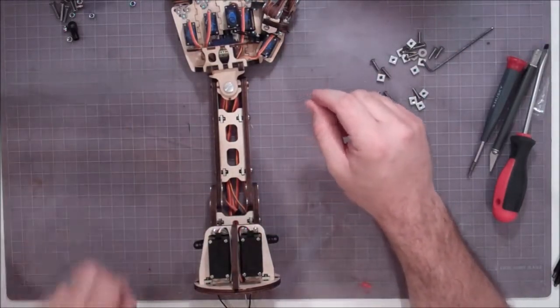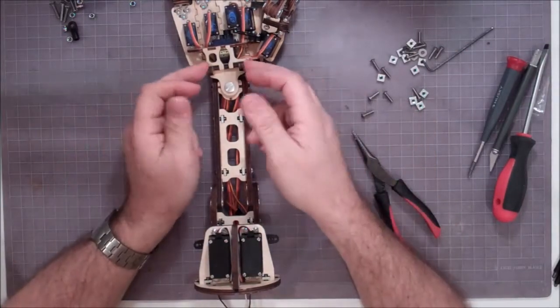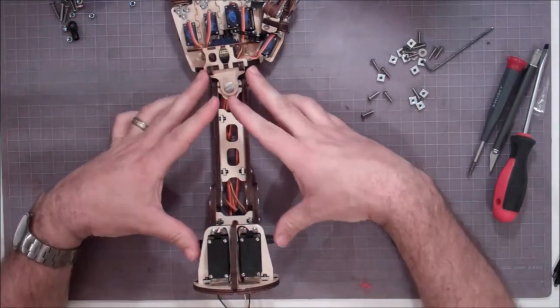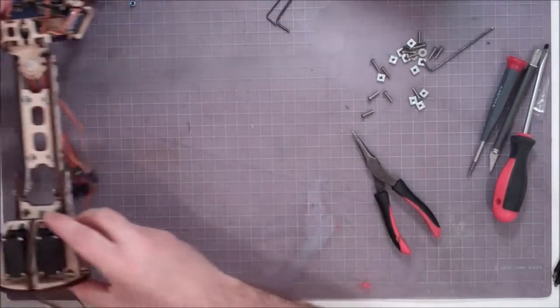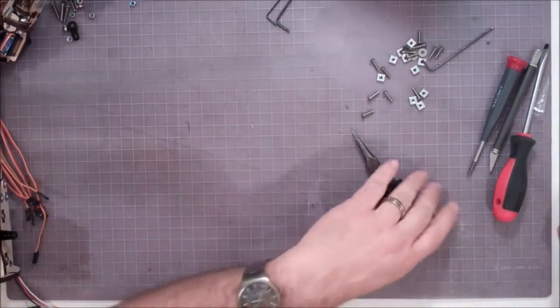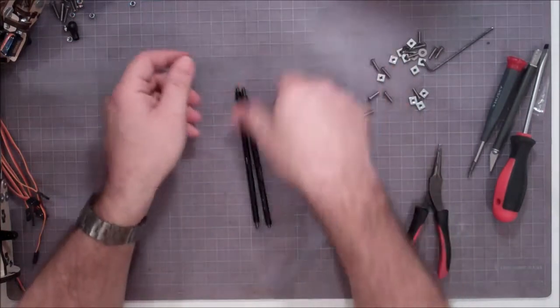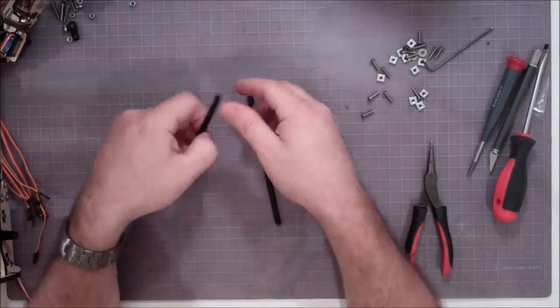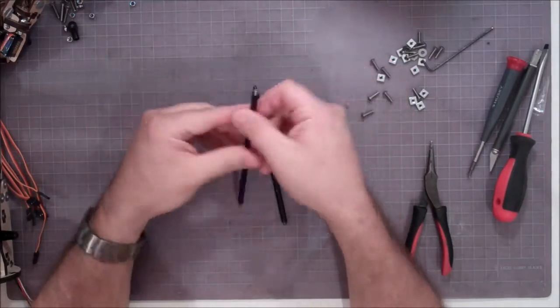So that completes this part of the assembly. Now what we need to do is go back to those connecting rods we had a little earlier. We need to finish those guys up and get those mounted on there. So I'm going to set our arm aside for a minute and we're going to go pick out the two connecting rods.